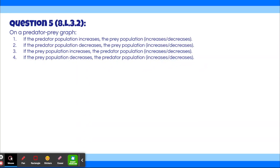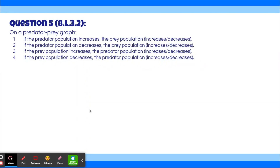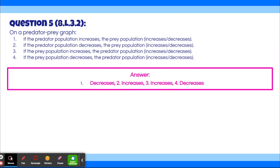Question 5. Fill in the following blanks about predator-prey relationships. If the predator population increases, the prey population decreases. If the predator population decreases, the prey population increases. If the prey population increases, the predator population increases. If the prey population decreases, the predator population decreases.